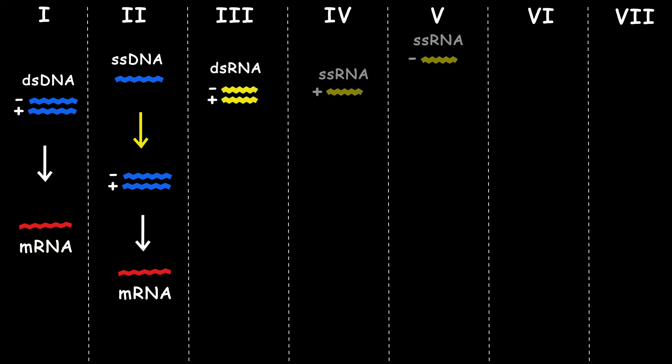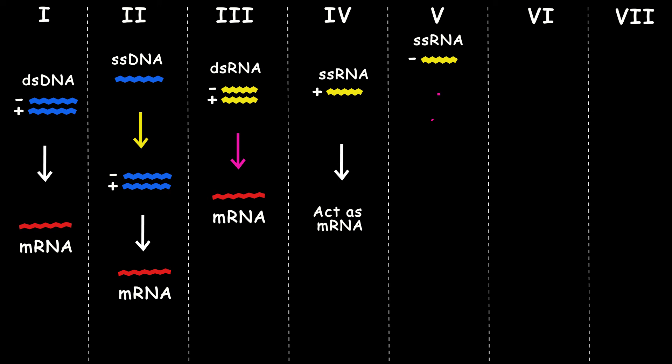The third, fourth, and fifth Baltimore groups have RNA as genetic material. It can be a double-strand RNA, in which you have a positive and negative strand. Viruses with double-strand RNA have a specific enzyme that can make mRNA from it. The next two groups have single-strand RNA, which can be either positive or negative strand. The positive single-strand RNA can directly act as mRNA because it has the same genetic code.